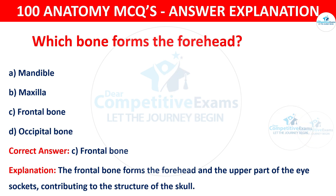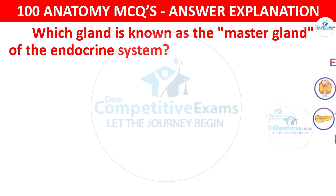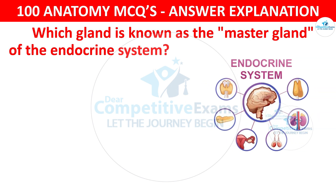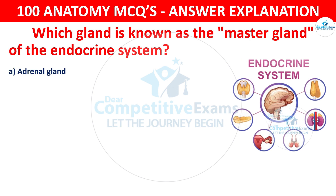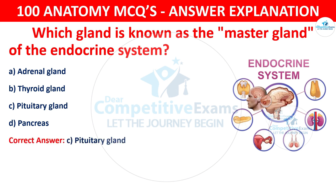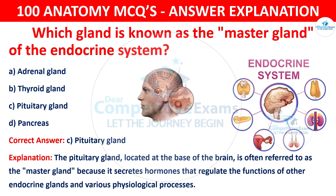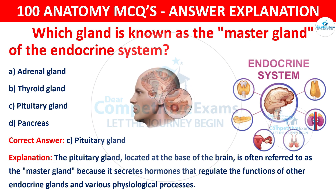Question number 100: Which gland is known as the master gland of the endocrine system? The options are: Adrenal gland, Thyroid gland, Pituitary gland, or Pancreas. The correct answer is C — pituitary gland. The pituitary gland, located at the base of the brain, is often referred to as the master gland because it secretes hormones that regulate the function of other endocrine glands and various physiological processes.